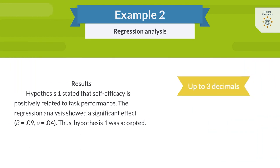For example, p equals 0.006, or p equals 0.03, unless p is smaller than 0.001. In that case, you write, p is less than 0.001.